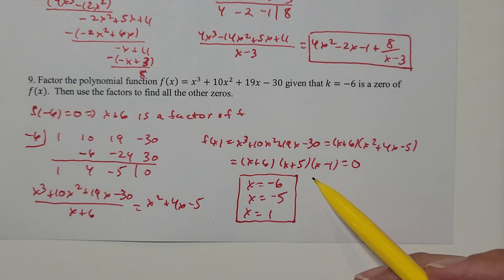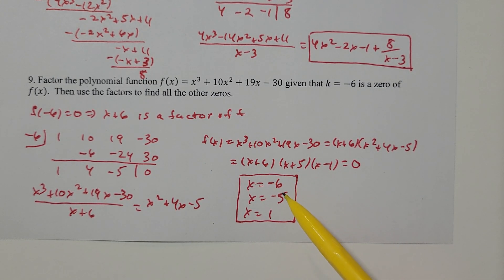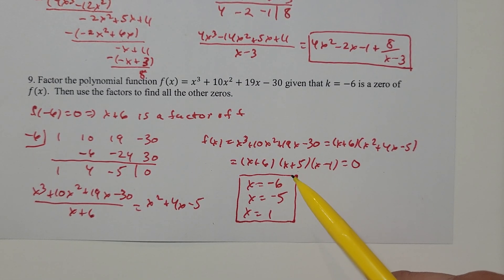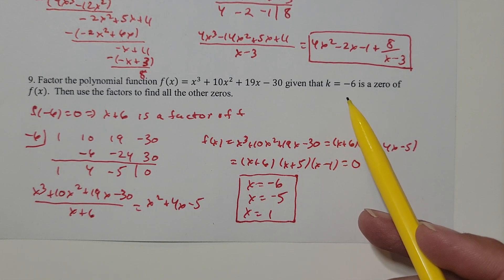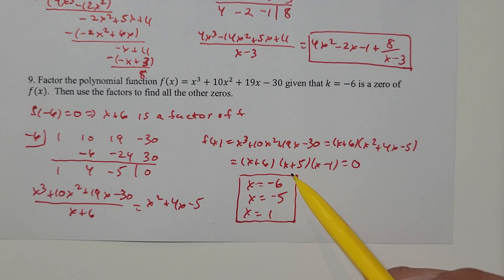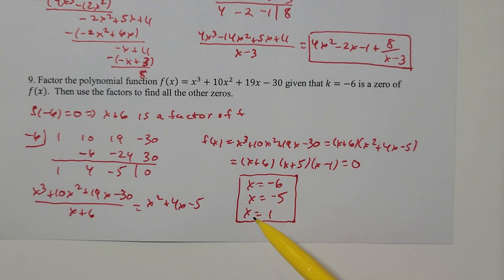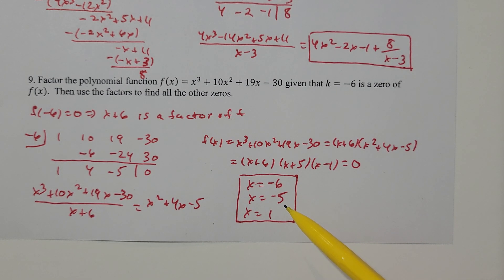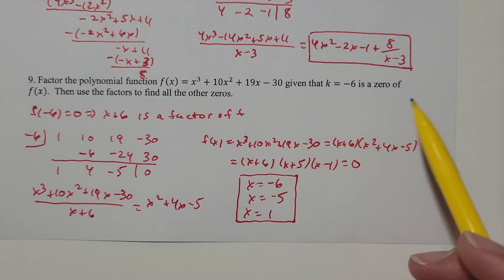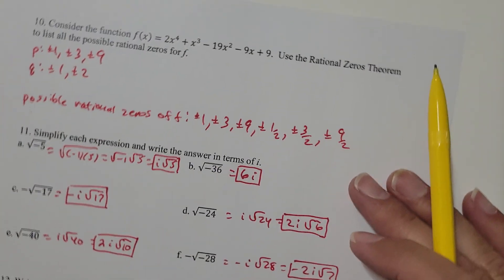The next thing I can do is set each factor equal to zero to get the zeros. X plus 6 equals zero means x is negative 6 — that was a number they already gave me, so I didn't find anything new there. But x plus 5 equals zero means x is negative 5, and x minus 1 equals zero means x is 1. So these three numbers are the three zeros.